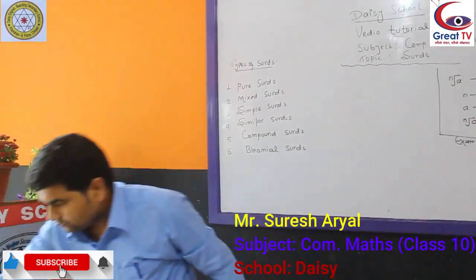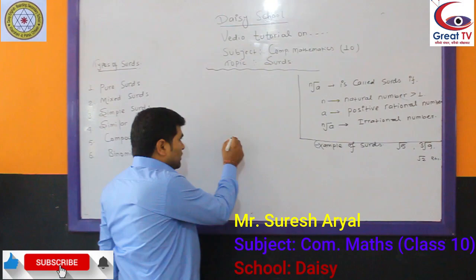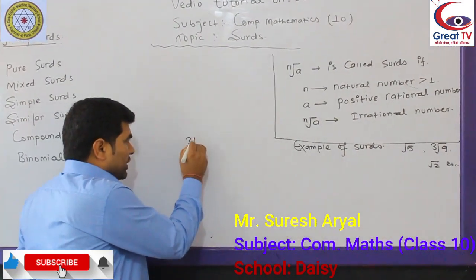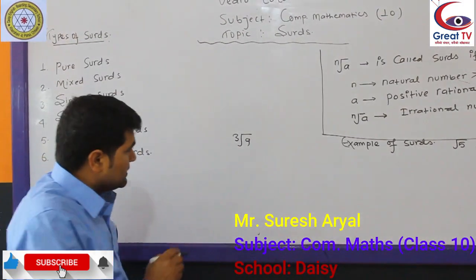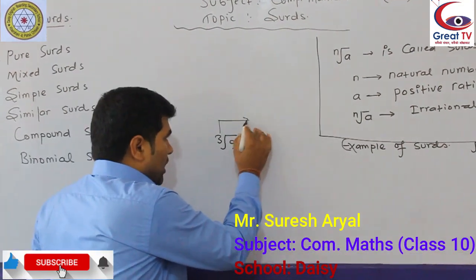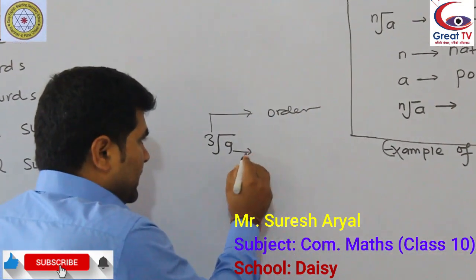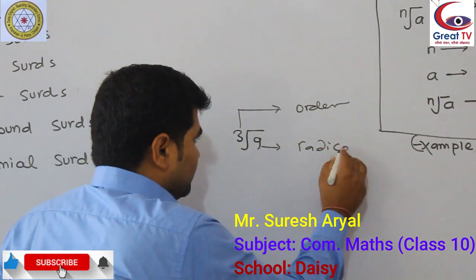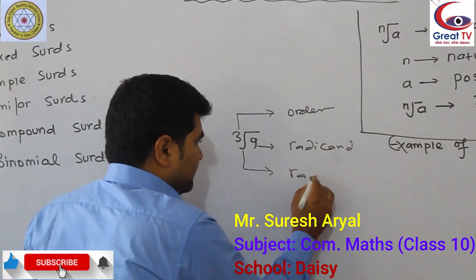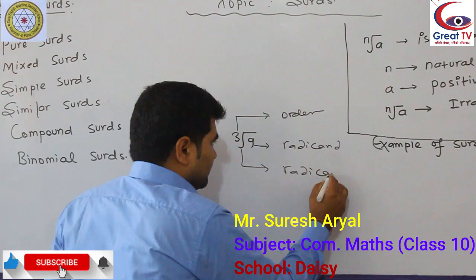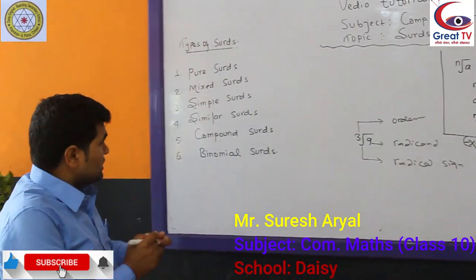The parts of a surd are — for example, take cube root under 9. This surd has three parts: 3 is the order, 9 is the radicand, and this symbol is the radical sign.